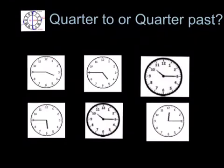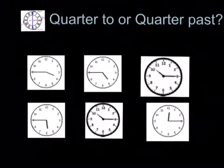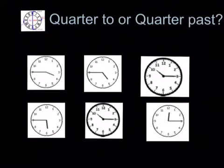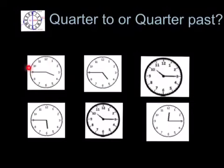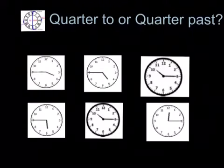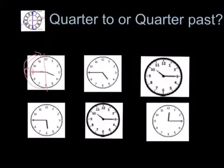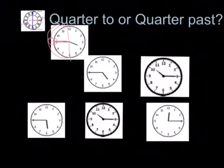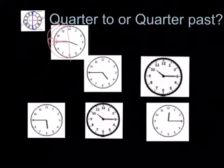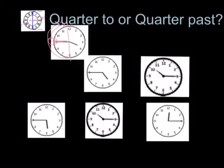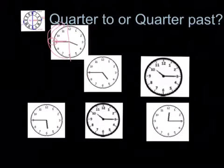Now we're going to look at these clocks and decide whether they're showing a quarter to time or a quarter past. Remember the two things we need to think about: what number is the long minute hand on, and what side of the clock is that on — is it on the side that says how many minutes past, or on the side that says how many minutes to the next hour? Let's take a look at this first clock. We can see that the long minute hand is on the 9. It's on the side of the clock where we talk about how many minutes to the next hour. And if it's pointing to the 9, it's only got a quarter of the way to travel until it gets to o'clock. So that is a quarter to time. Let's look at this clock here — where is that minute hand pointing? It's pointing to the 9, so that is a quarter to time.